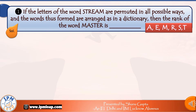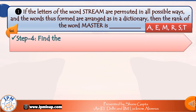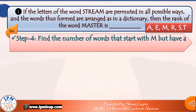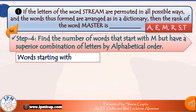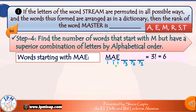Now come words that start with M, but even among these, master won't be the first. After M comes A, but after A there would be the letter E alphabetically. So all words starting with M-A-E will be ranked before master. With M in the first place, A in the second, and E in the third — each filled in one way — the remaining three places can be filled with the remaining three letters in 3! = 6 ways. So there are 6 words that start with M-A-E.